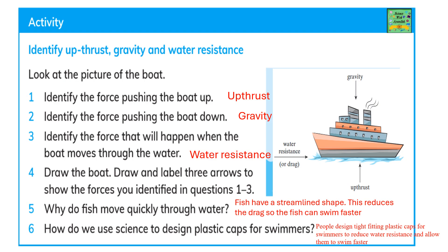Identify up thrust, gravity and water resistance. Look at the picture of the boat. Identify the force that is pushing the boat up — it's up thrust. Thrust means to push something and up means to push upwards. Identify the force pushing the boat down — it's obviously gravity. Identify the force that will happen when the boat moves through water — it's water resistance.